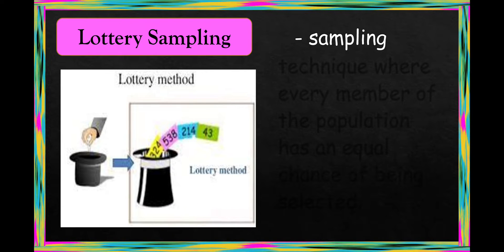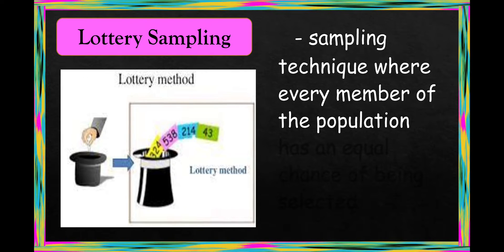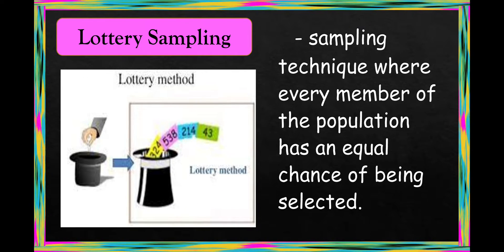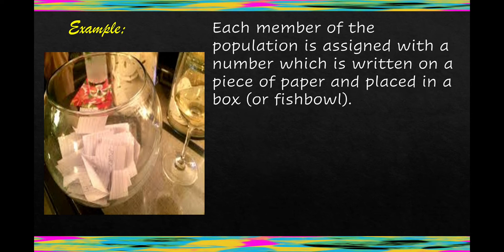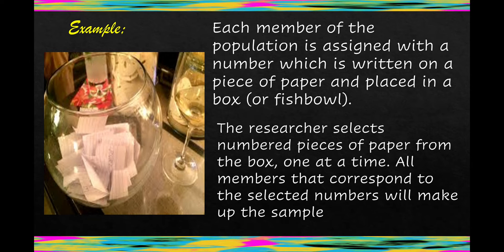Lottery sampling is a sampling technique where every member of the population has an equal chance of being selected. Each member of the population is assigned a number which is written on a piece of paper and placed in a box or fish bowl. The researcher selects pieces of paper from the box one at a time, and all members that correspond to the selected numbers will make up the sample.